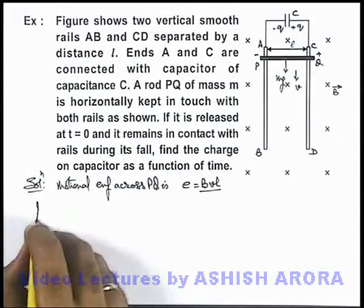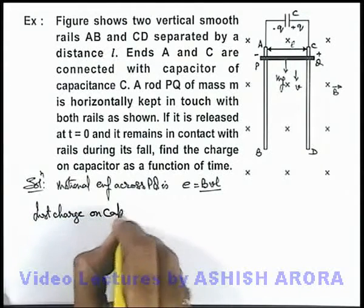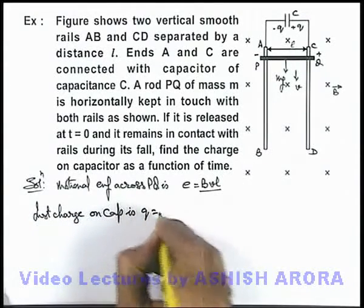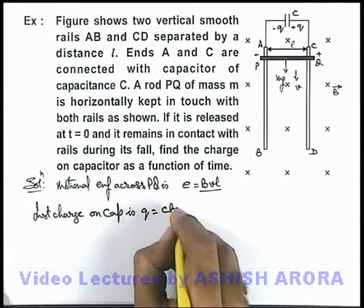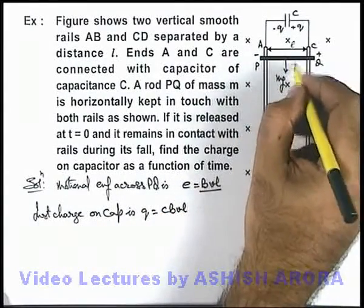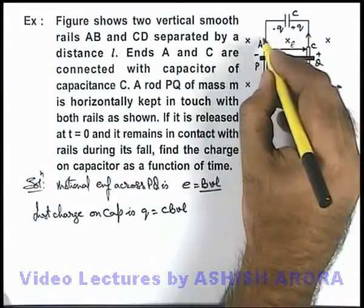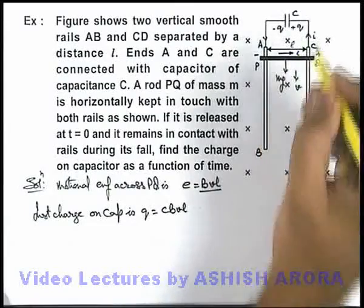So we can directly write instantaneous charge on capacitor is, this we can write as CVV, that is CBvl. Here we can see as motional EMF is increasing, the charge will also increase, due to which we can say a continuous current will flow in the circuit.